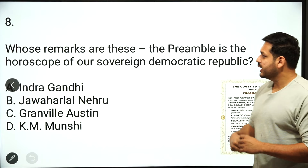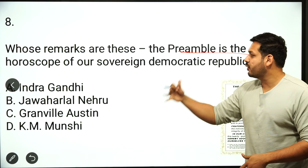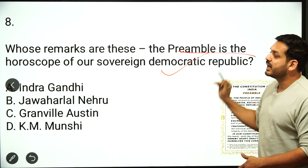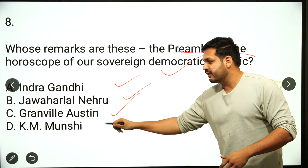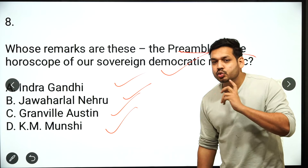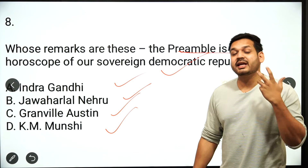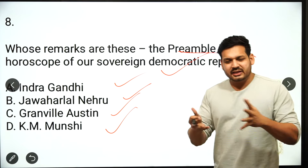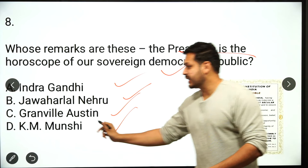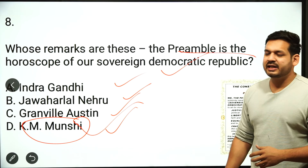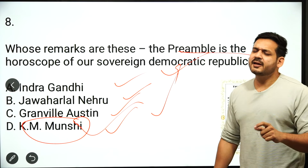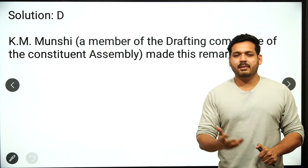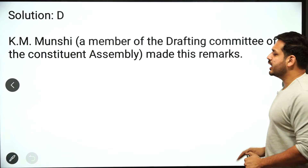The eighth question: who has said that 'the Preamble is the horoscope of our sovereign democratic republic'? Options are Indira Gandhi, Jawaharlal Nehru, Granville Austin, or K.M. Munshi. You may think Granville Austin, but that is not correct. The correct answer is K.M. Munshi — he was a member of the Constituent Assembly and gave this important statement. The correct answer is option D.